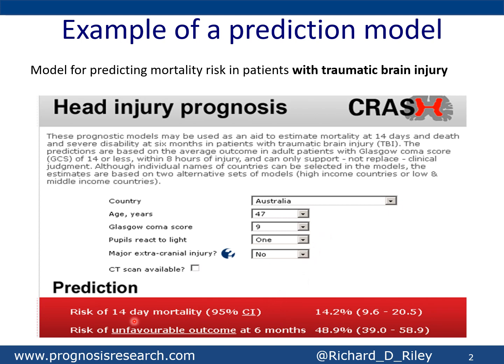So here we see a risk of 14% at 14 days for mortality, and at six months unfavorable outcome the risk is about 50%. This is a prediction model, and these are utilized in practice to guide decision making, patient care, and maybe even treatment decisions.